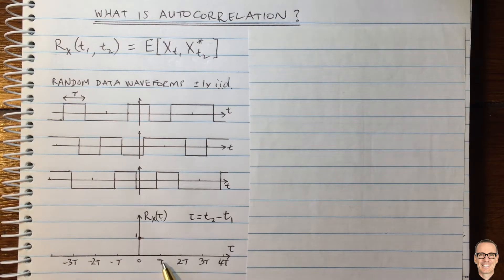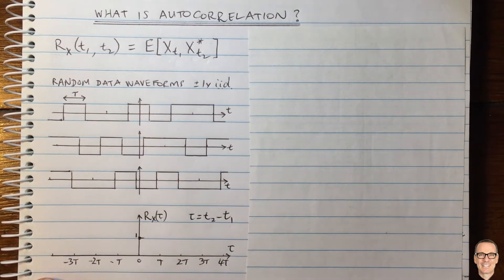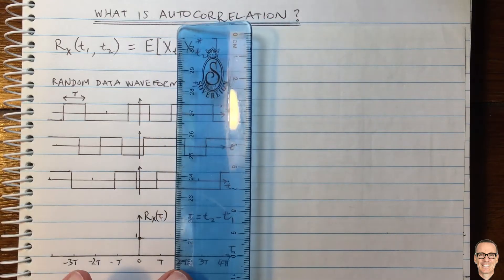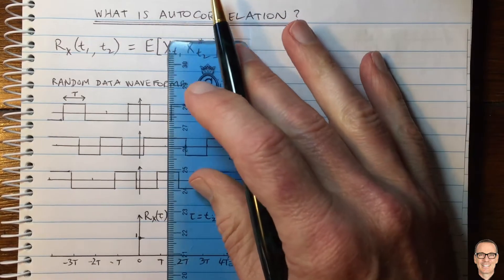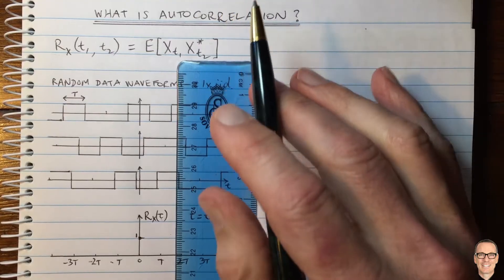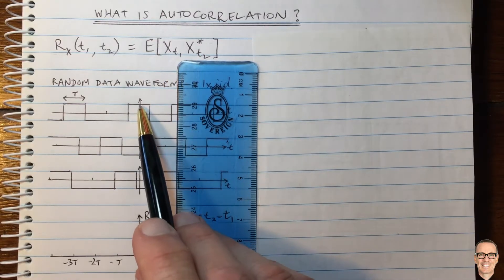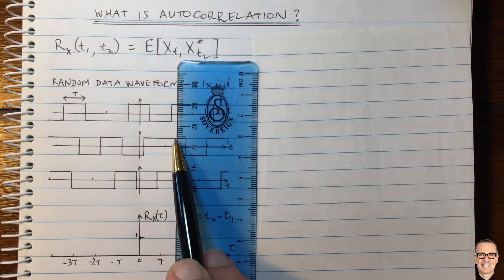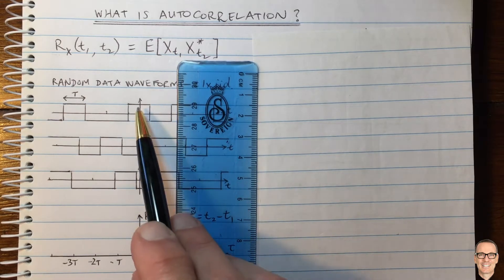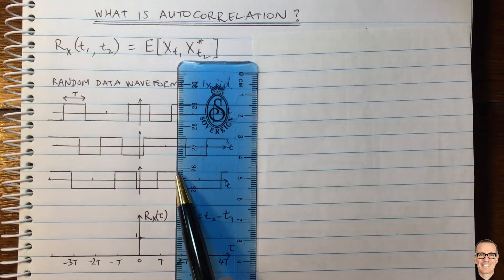Let's take a time difference bigger than capital T. Keeping T1 at zero and letting T2 be larger than T, we now look at what the autocorrelation gives us. Here T1 is zero and T2 is at this later time — we multiply the two values together. In the first case it's one times one, giving positive one. In the second case, it's negative one times positive one, giving negative one. In the third example, it's also negative one times positive one, giving negative one.